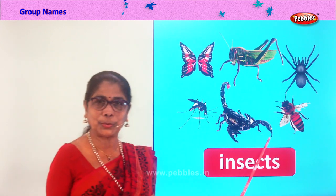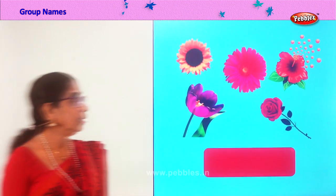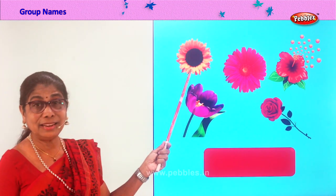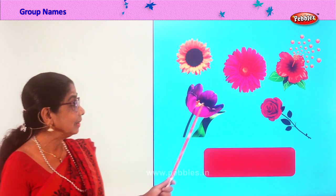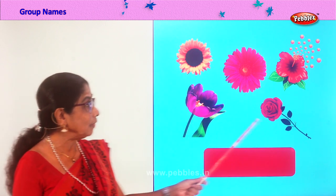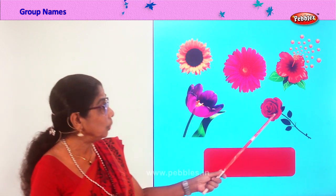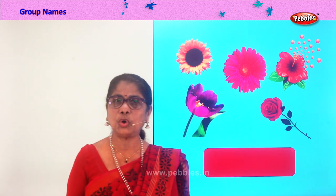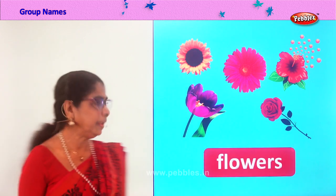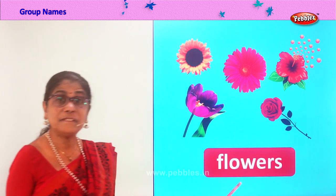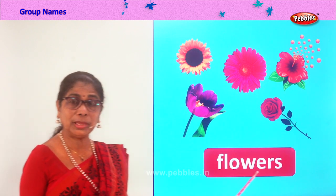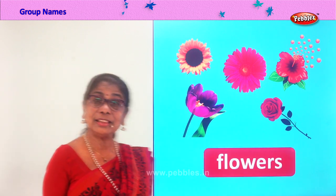Let's look at another group. Sunflower, a lovely purple flower, rose, hibiscus and so on — what is the name for all this together? Flowers! The group name is flowers: F-L-O-W-E-R-S.